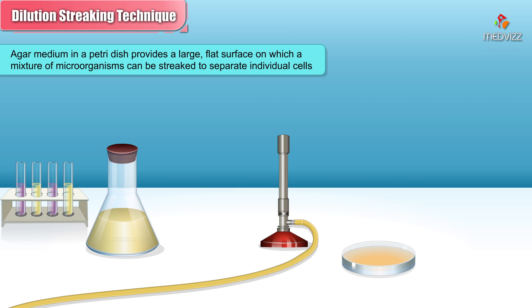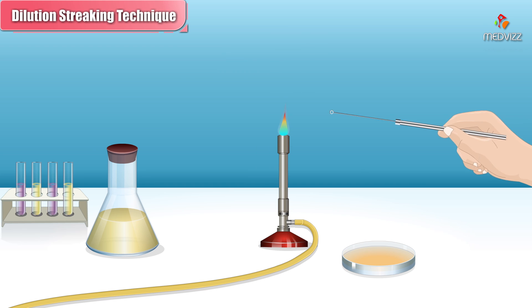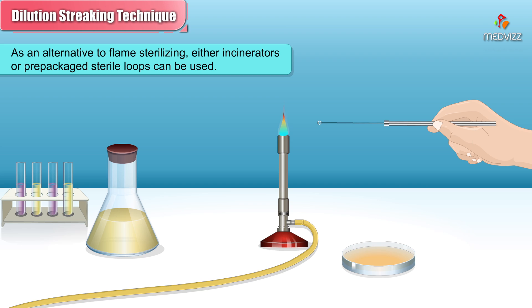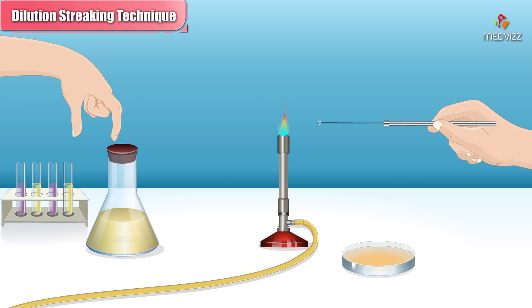Agar medium in a petri dish provides a large flat surface on which a mixture of microorganisms can be streaked to separate individual cells. In the dilution streaking technique, an inoculating loop is sterilized in a flame and allowed to cool. As an alternative to flame sterilizing, either incinerators or prepackaged sterile loops can be used.